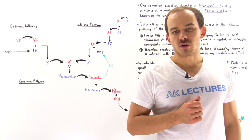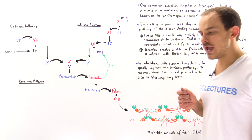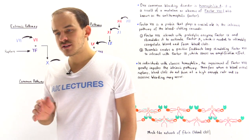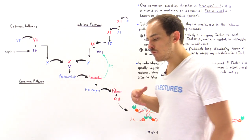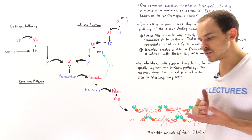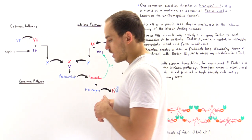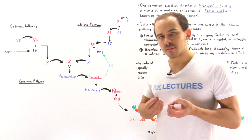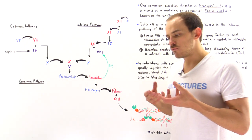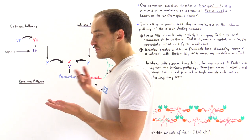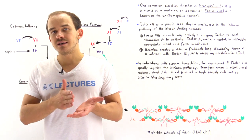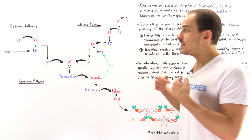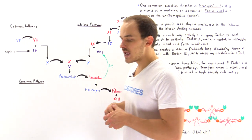The most common bleeding disorder in humans is hemophilia A, also known as classic hemophilia. Before we discuss this medical condition and what causes it, let's remember the blood clotting cascade. Whenever there is some type of trauma inside our blood vessel — a cut or a rupture in the endothelium — that basically initiates the blood clotting cascade.